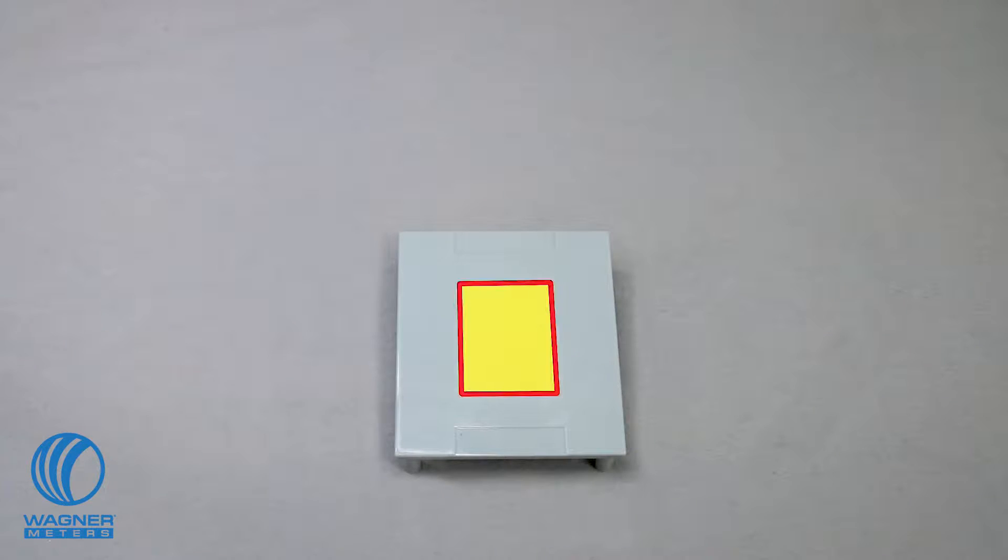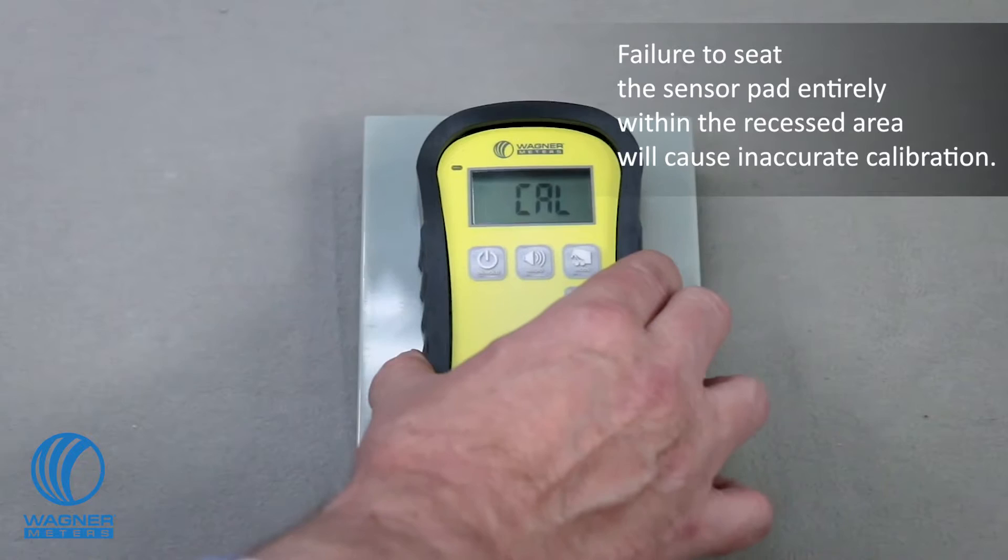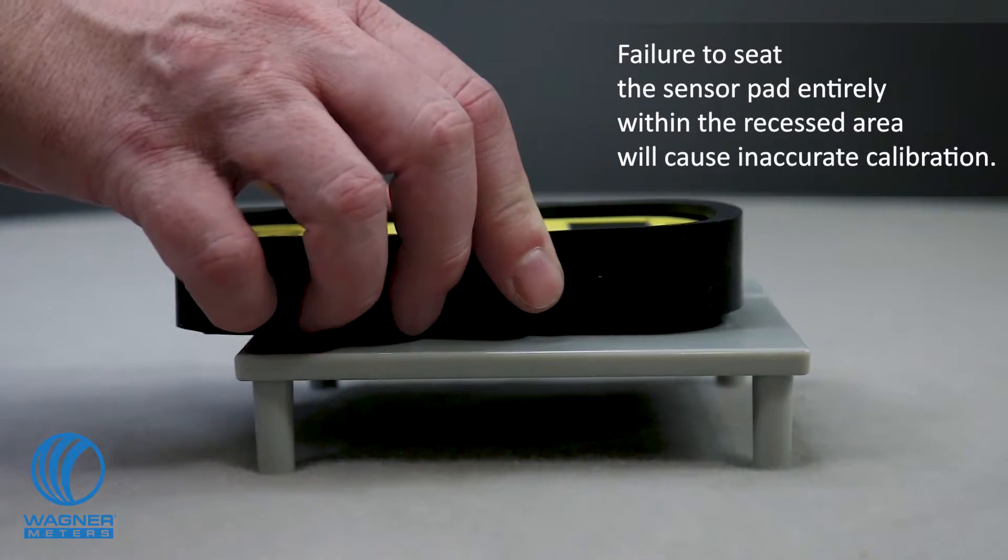Place the meter sensor pad directly within the recessed area of the calibrator platform. Move the meter back and forth and side to side to ensure that the sensor pad is firmly within the recessed area.